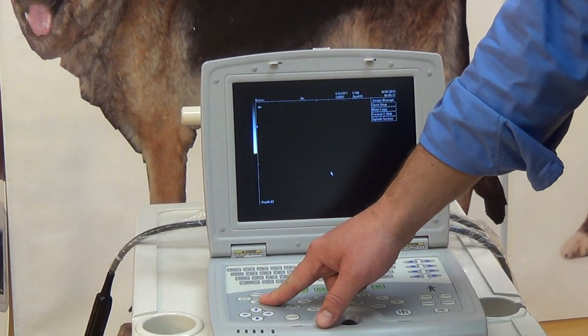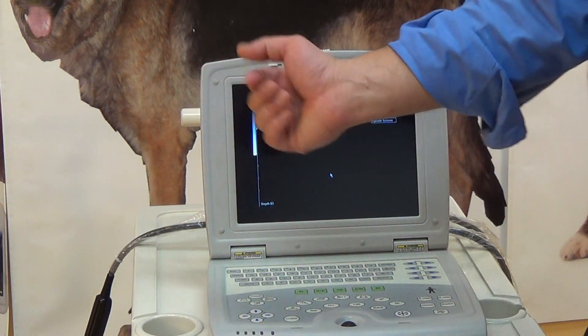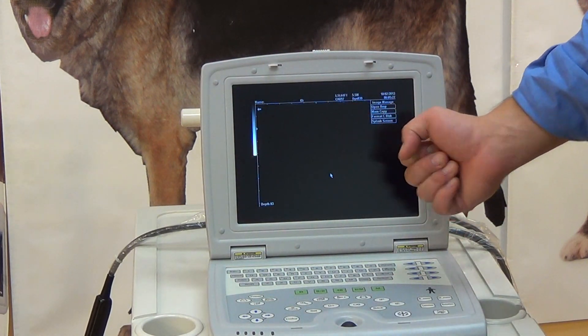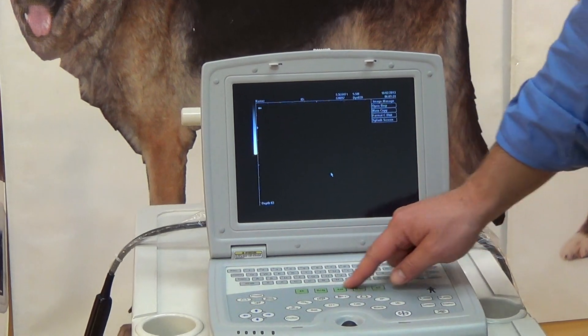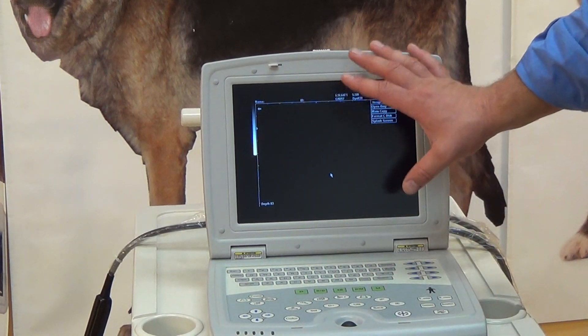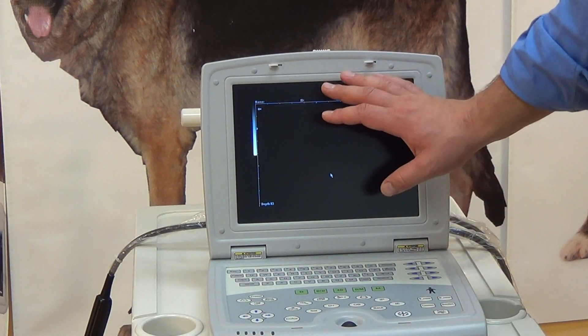Then we have a cine button, which once you have several images, you can loop through what you've frozen. Going towards the middle of the screen, we have our different modes. So B mode is your standard image mode. That's what's always on the screen, just one screen.